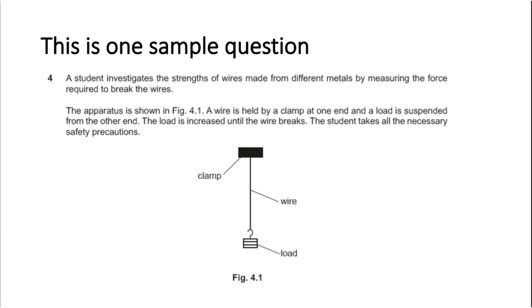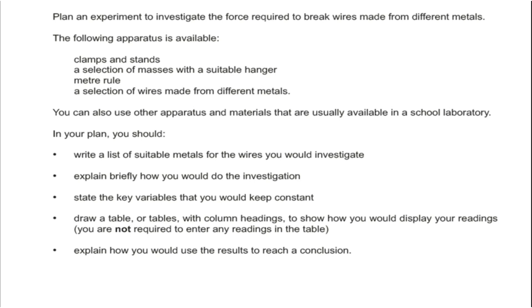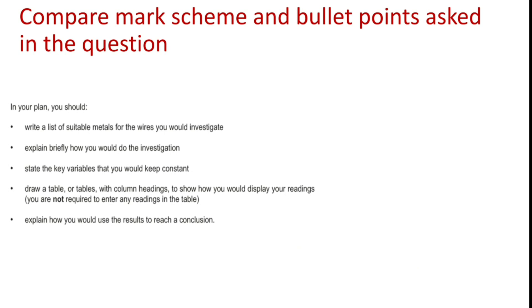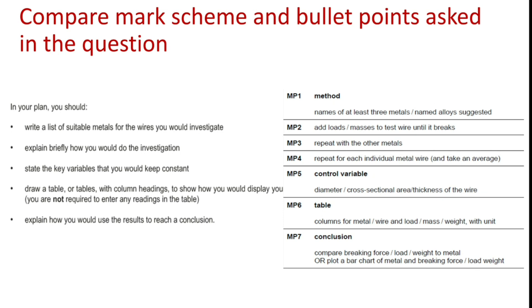This is one sample question: a student investigates the strength of wires made from different metals by measuring the force required to break the wires. Here is the diagram and these are the bullet points we need to use to plan an experiment investigating the force required to break wires made from different metals. I have compared the mark scheme and the bullet points asked in the question. As per my observation, each bullet point contains one mark, so if you refer to each point at least once, you will get a minimum of five marks in your planning question.